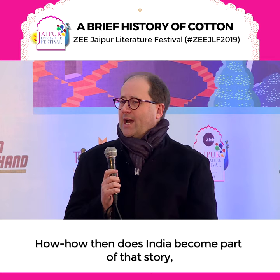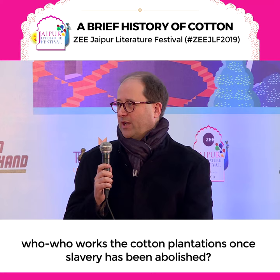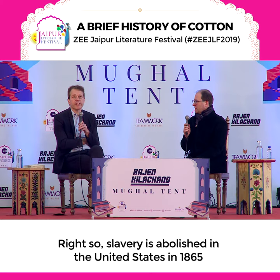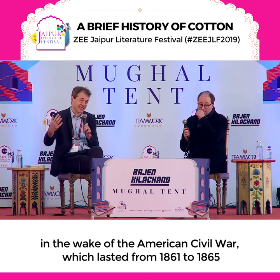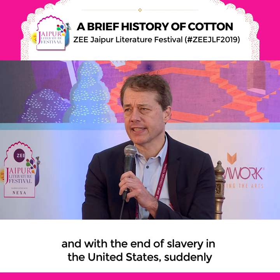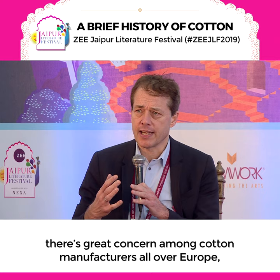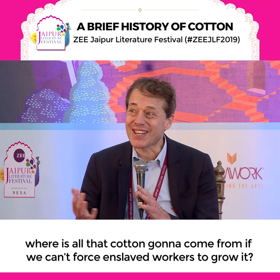How does India become part of that story? Who works the cotton plantations once slavery has been abolished? Slavery is abolished in the United States in 1865 in the wake of the American Civil War, which lasted from 1861 to 1865. With the end of slavery in the United States, there's great concern among cotton manufacturers all over Europe about where all that cotton is going to come from if they can't force enslaved workers to grow it.